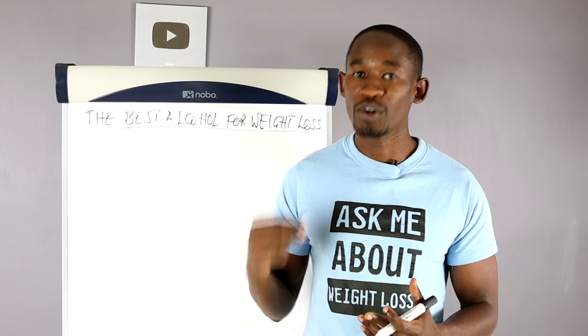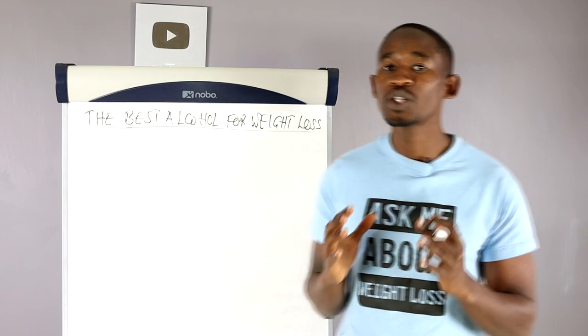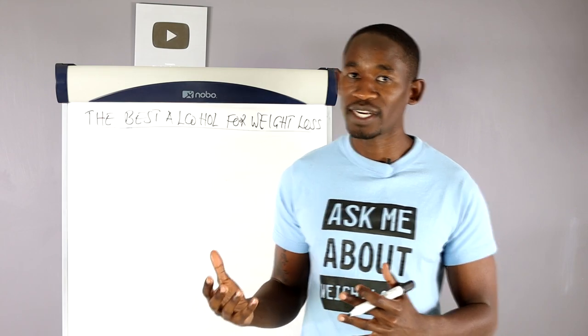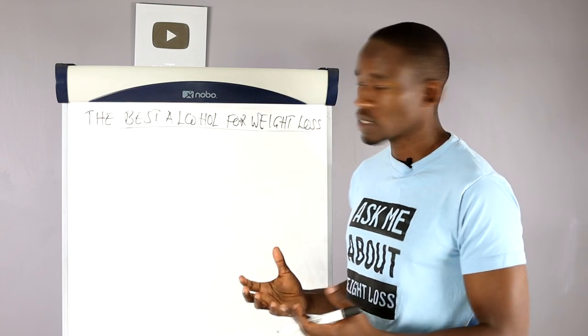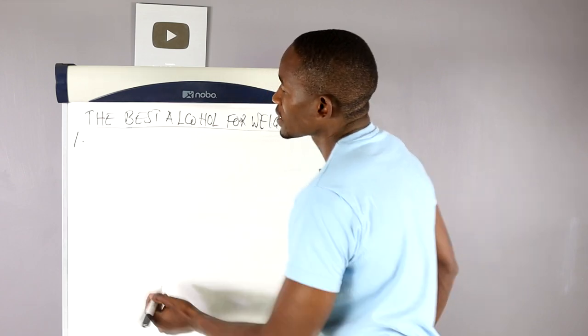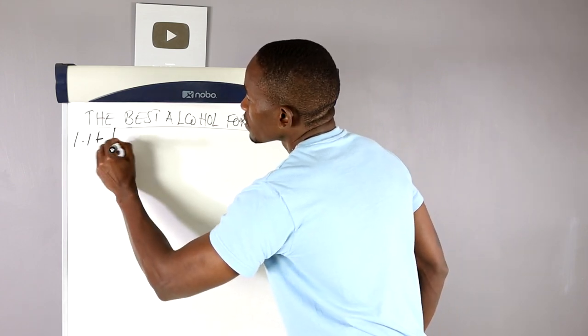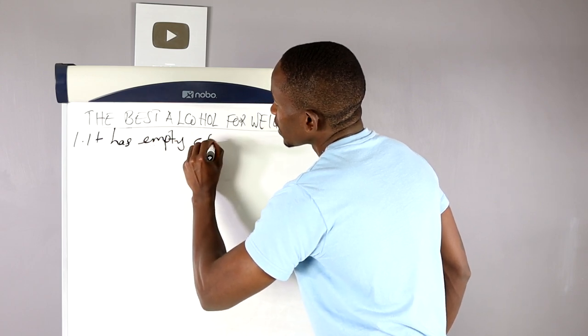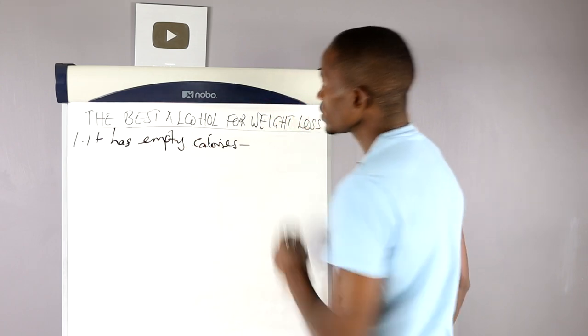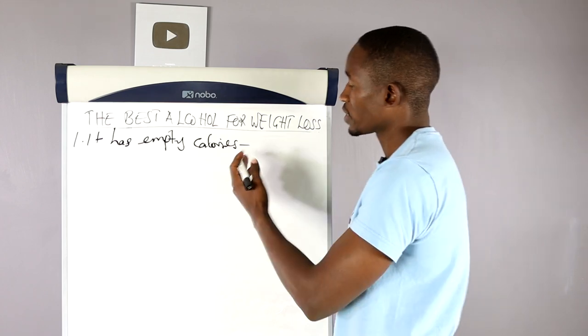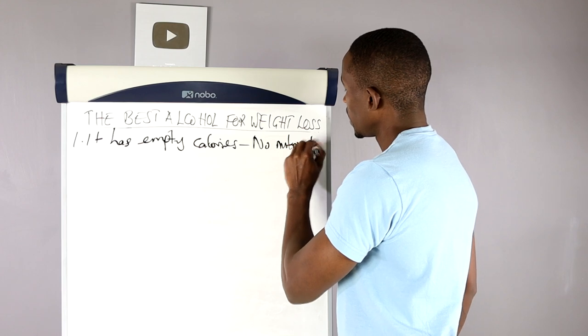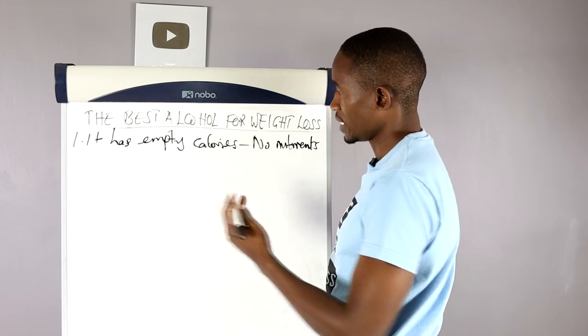So first we're going to look into how alcohol slows down weight loss, then I'll share these drinks. How does alcohol slow down weight loss? The first way is that it has empty calories. This means that alcohol has calories but no nutrients, and these calories will eventually lead to weight gain.